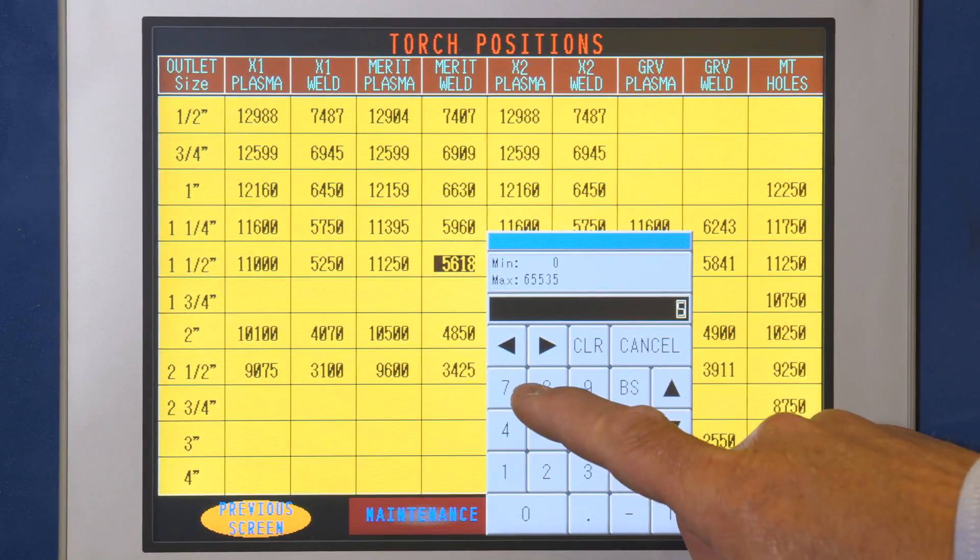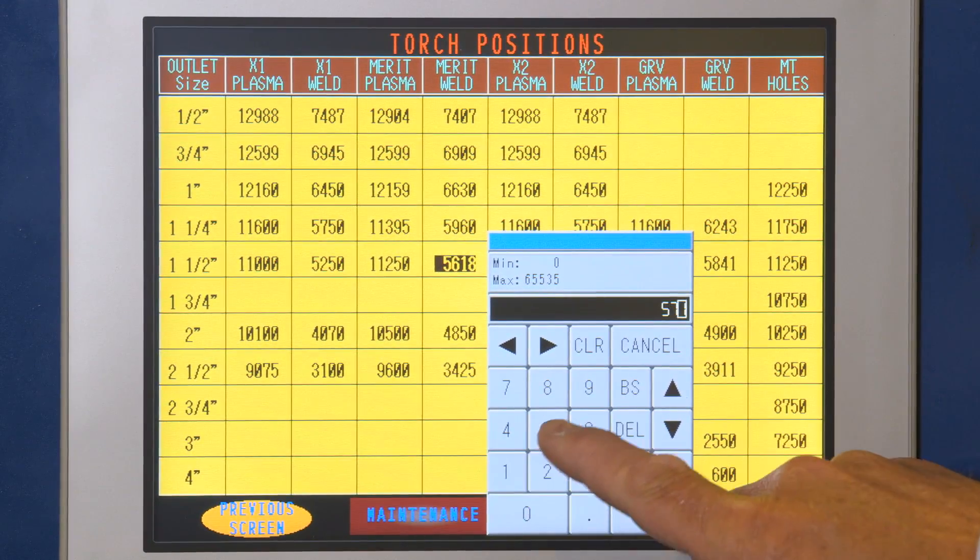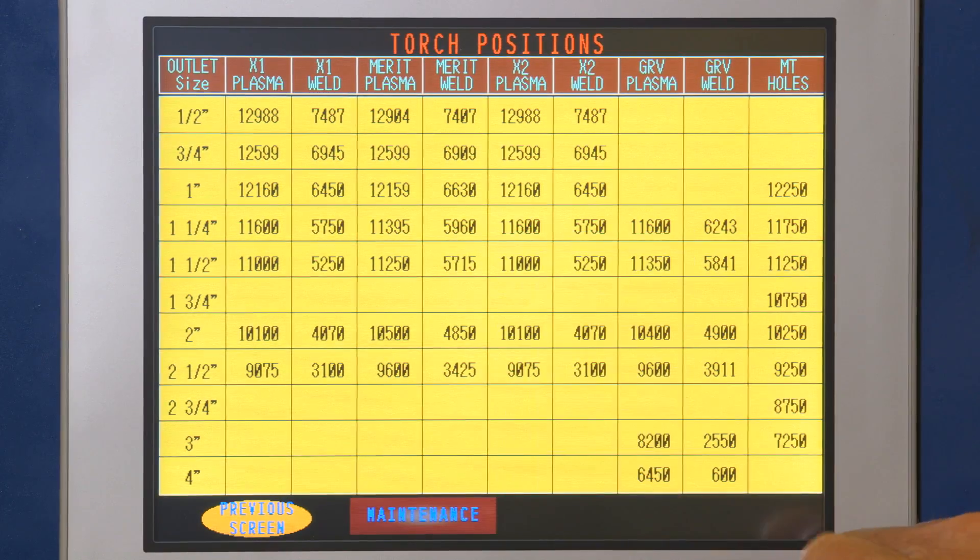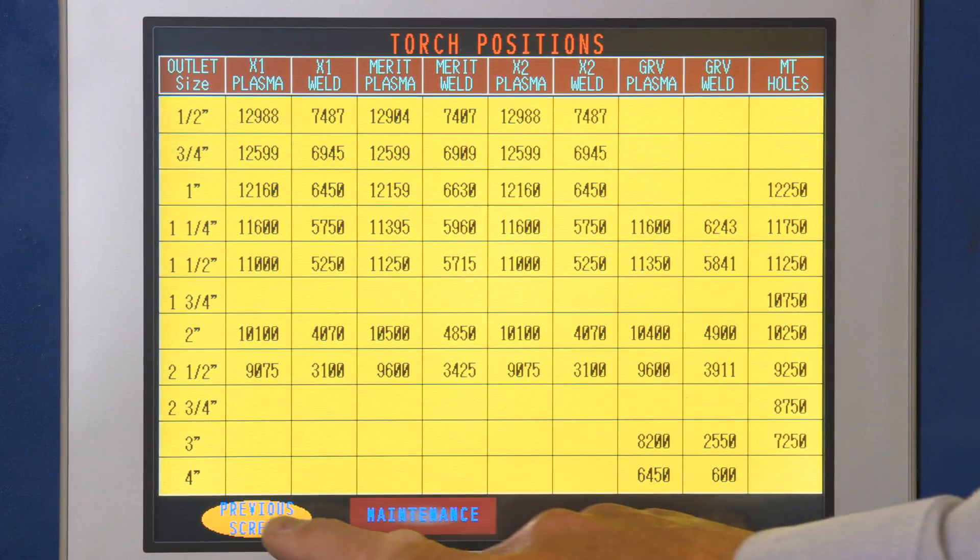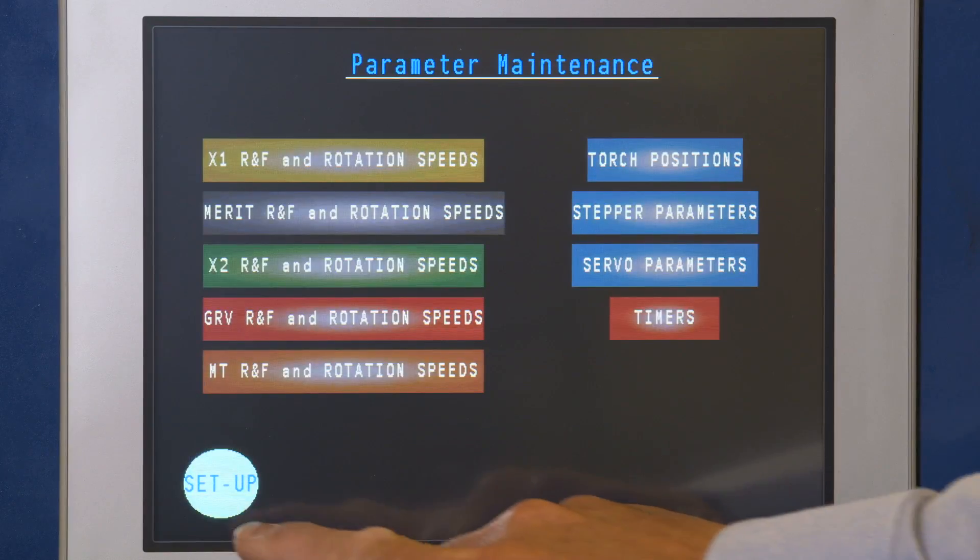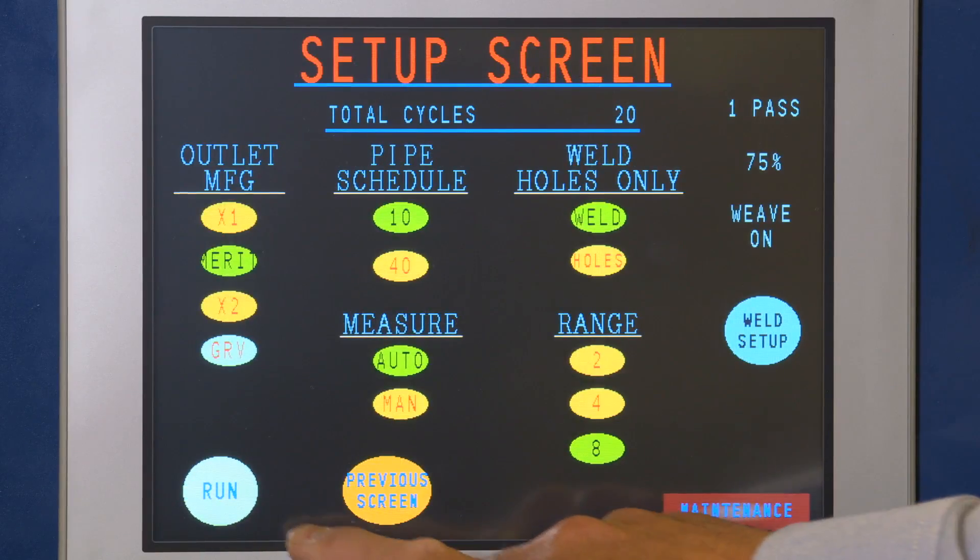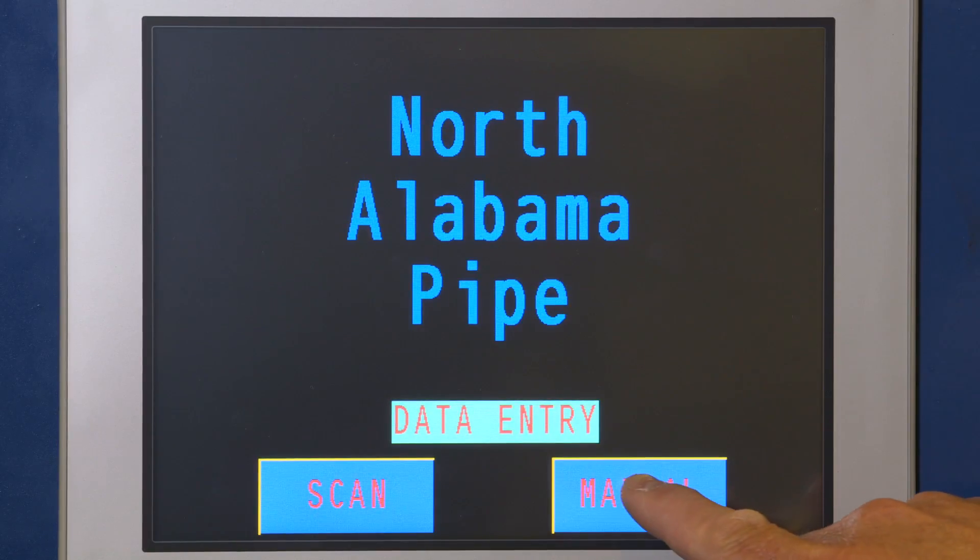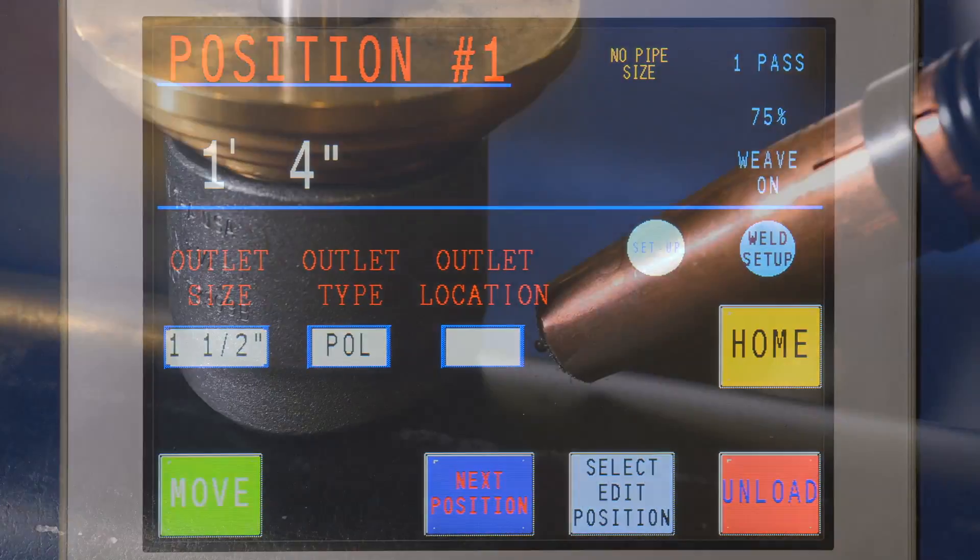Change number in weld column to desired measurement. Press enter button. This adjustment is only for each individual outlet and outlet manufacturer.